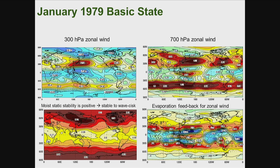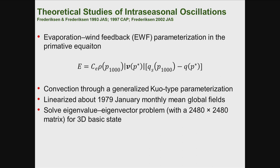Here is the basic state for January 1979 — 300 millibar wind, 700 millibar wind, and moist static stability. The moist static stability is always positive, which means there's no mechanism to generate the wave-CISK mechanism, so it's used to exclude that mechanism. This shows the evaporation and surface wind feedback, which is one of the important terms in the equation.